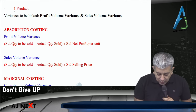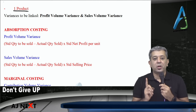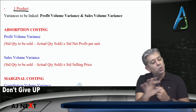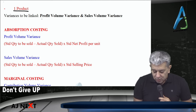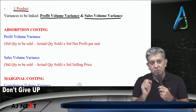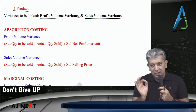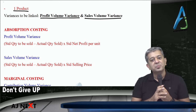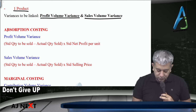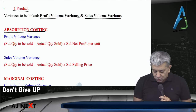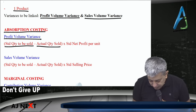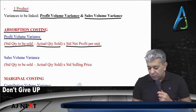Now the first relationship: if there is only one single product — suppose the company only makes and sells one single product, that is product X, no other product — then two variances which are related to each other will be profit volume variances and sales volume variances. Profit volume variances can also be called sales gross margin volume variances. Under marginal costing, profit volume can also be called contribution volume variances. Under absorption costing, profit volume variance is computed as: how many units should have been sold minus how many units were sold, into standard net profit per unit.